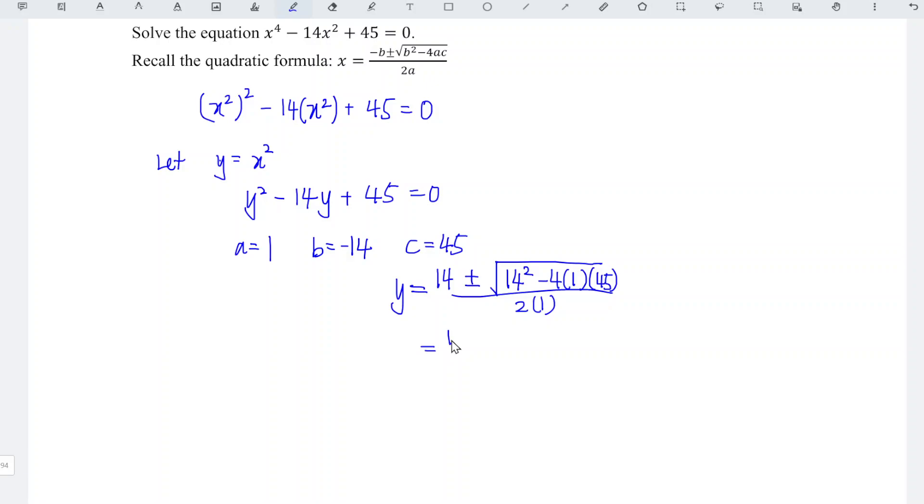Simplifying, we obtain 14 plus or minus the square root of 16, which is 4, all divided by 2. So y equals 14 plus 4 over 2,